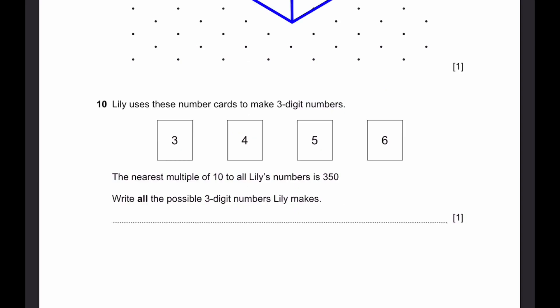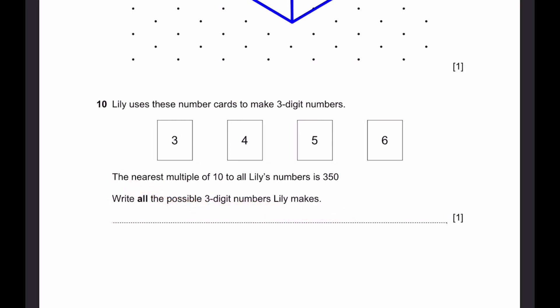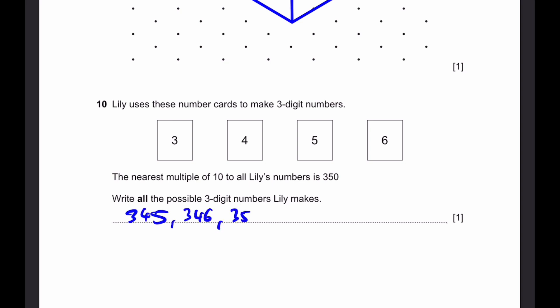Question 10. Lily uses these number cards to make 3-digit numbers. The nearest multiple of 10 to all of Lily's numbers is 350. Write all the possible 3-digit numbers Lily makes. Basically what they're saying is that if you round the number to the nearest 10, you will get 350. So all the numbers that round to that are simply 345, 346, and 354.